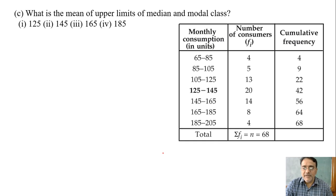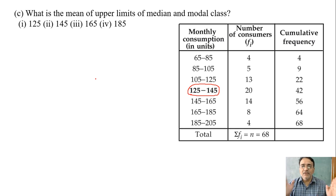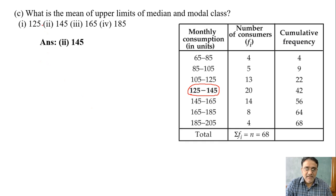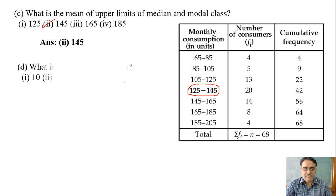Now the next question: what is the mean of the upper limits of the median and the modal class? We found that the median class is 125 to 145 and the modal class is also 125 to 145, so the upper limit for both is 145. The mean of 145 and 145: we add them to get 290 and divide by 2, giving us 145.